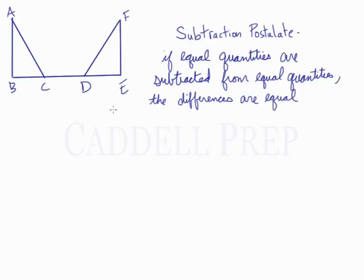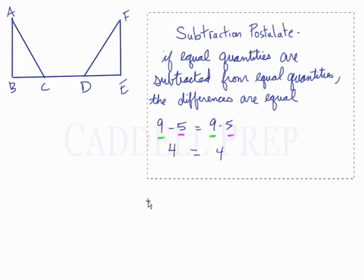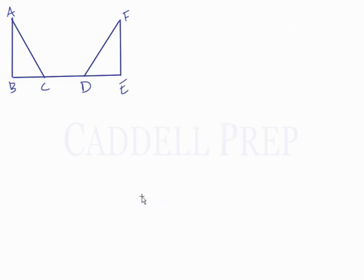Now let's look at the subtraction postulate, which is pretty similar to the addition postulate. The subtraction postulate states: if equal quantities are subtracted from equal quantities, the differences are equal. So if we have 9 minus 5 and 9 minus 5 — the 9's are equal, the 5's are equal — therefore this expression equals this expression. Afterwards we could use the substitution postulate to substitute 4 in for each. But we want to apply this to a proof such as proving triangles congruent, so let's look at an example.